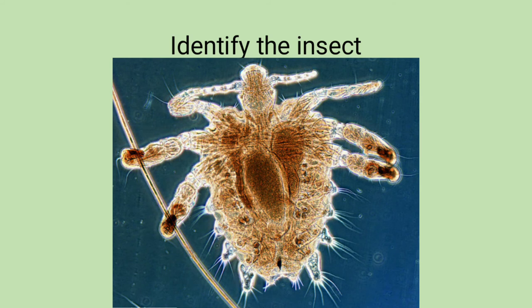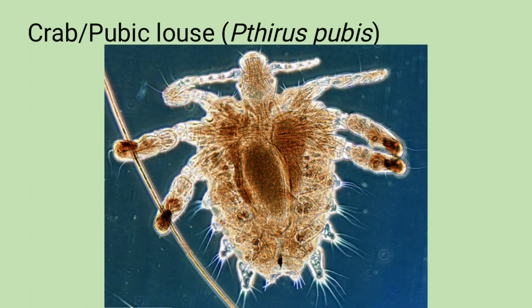Identify the insect: This is crab louse, or pubic louse (Phthirus pubis). It causes infestation of the pubic hair.